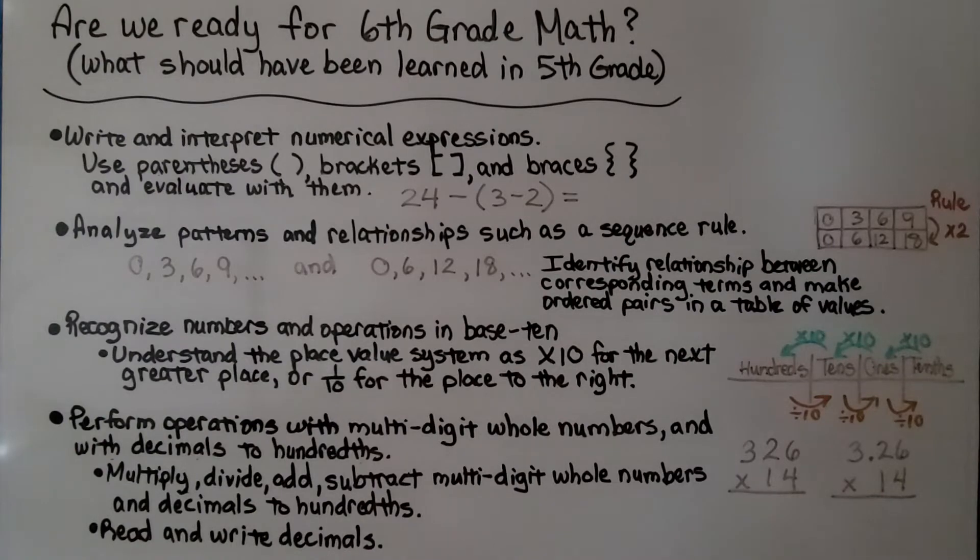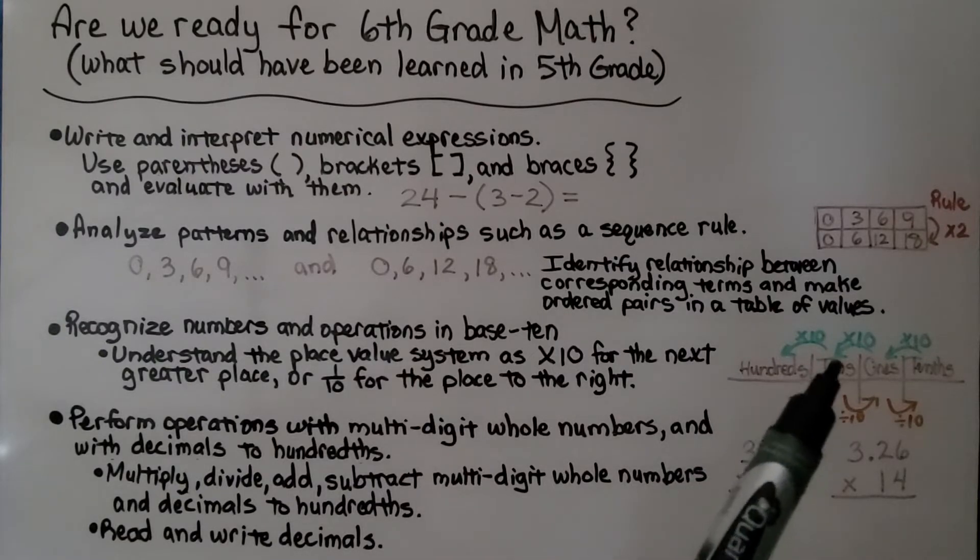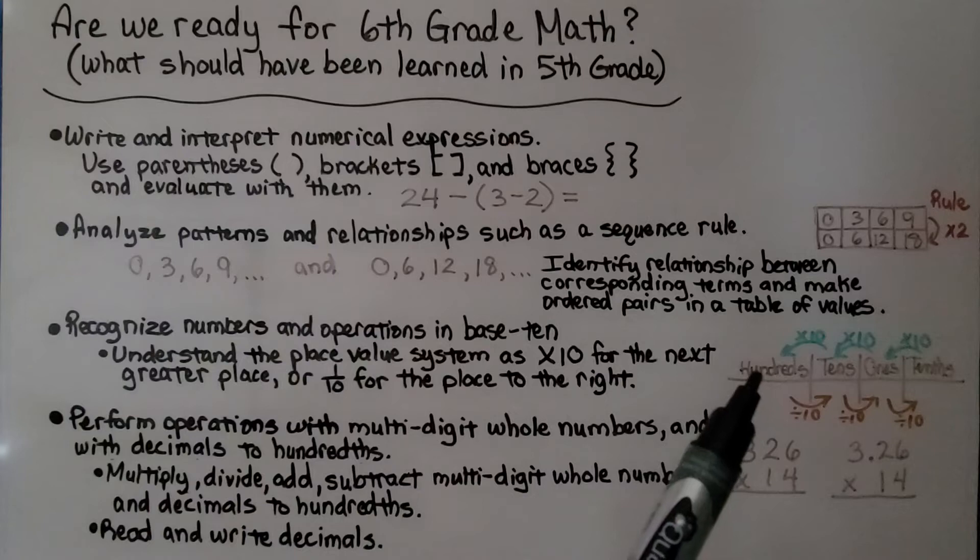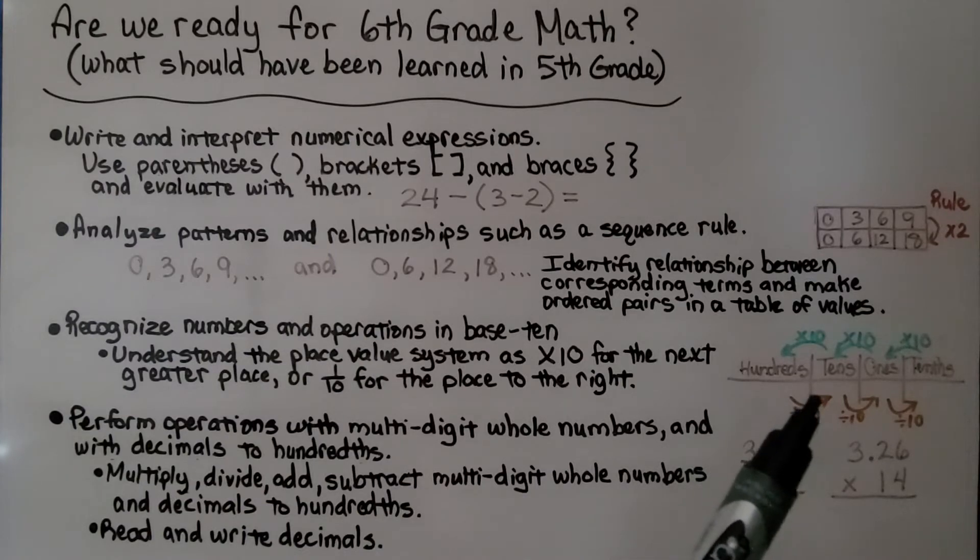Can you recognize numbers and operations in base 10 and understand the place value system as times 10 for the next greater place or 1 tenth for the place to the right? Do you know to multiply times 10 to get to the next greater place value or divide by 10 to go to the next lesser place value?